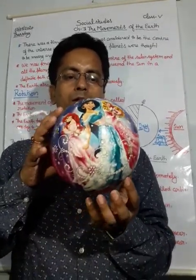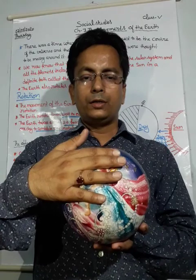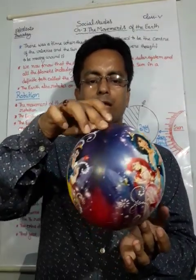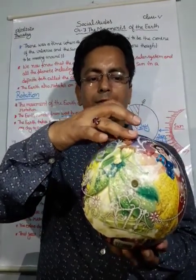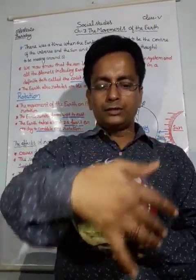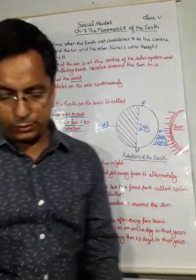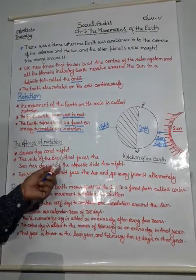Here is a ball — the front portion of the ball faces the light, so that portion will have daytime. The portion at the back will be nighttime. In the same way, when the earth rotates, the side that was at the back comes to the front and receives light, giving it daytime, while the other side goes into the back and experiences nighttime.